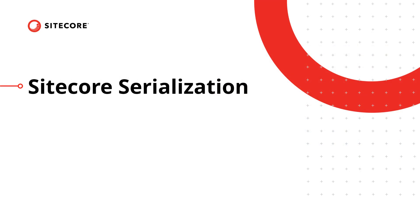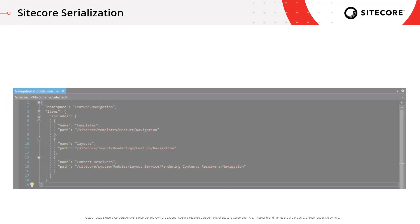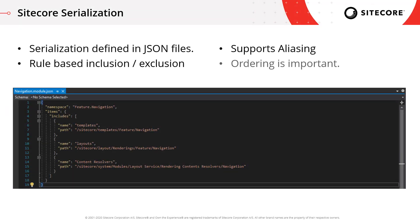We're going to start with Sitecore Serialization. Now, Sitecore has had serialization functionality for a long time, but with Sitecore 10 we have a brand new way for you to serialize your content items to disk. You serialize your content items by creating modules, which consist of a JSON document with a specifically named format. You can then use rules to include and exclude items that you want to store to disk and into your source control system.